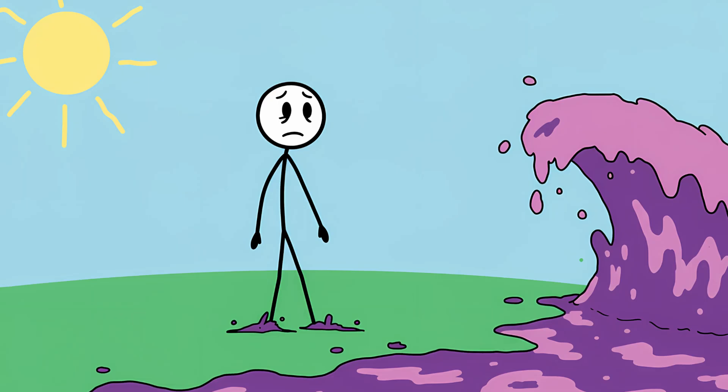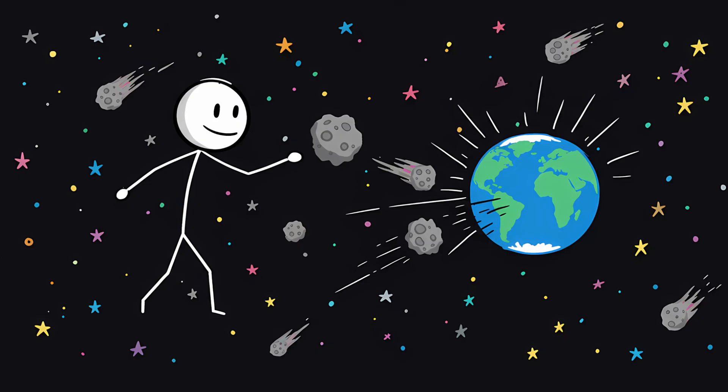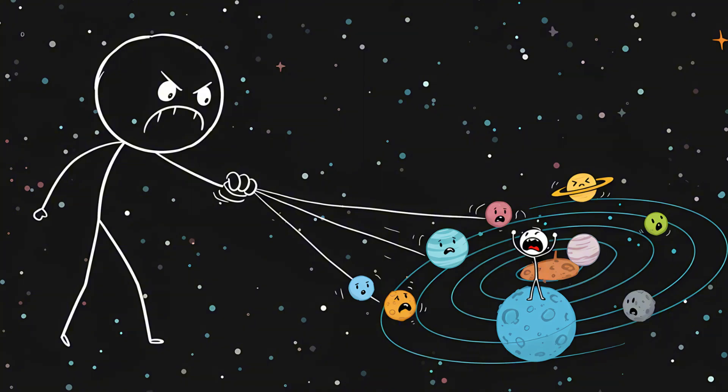By then, panic would be setting in, because we'd realize there's an invisible monster bowling through our solar system. This isn't a quick, merciful zap like a gamma ray burst. This is a slow, agonizing home invasion. It would start by flinging comets and asteroids from the outer solar system directly at Earth, a celestial game of pinball where we are the bumper.